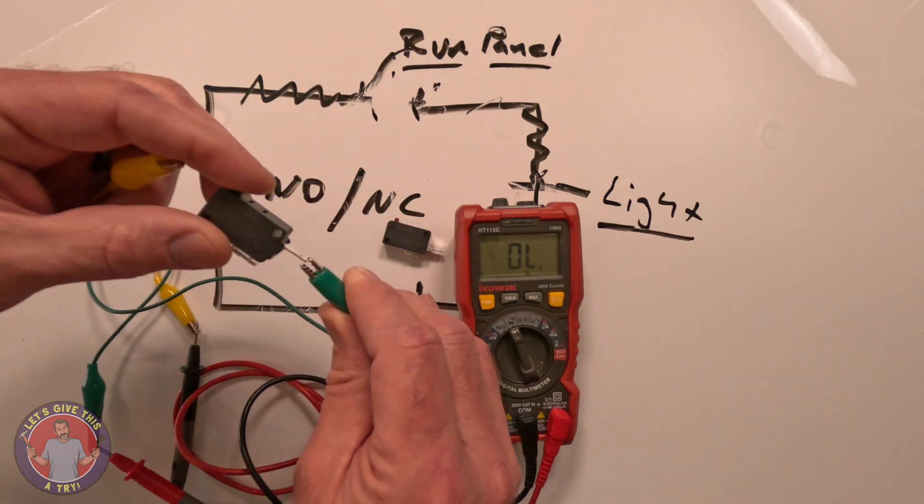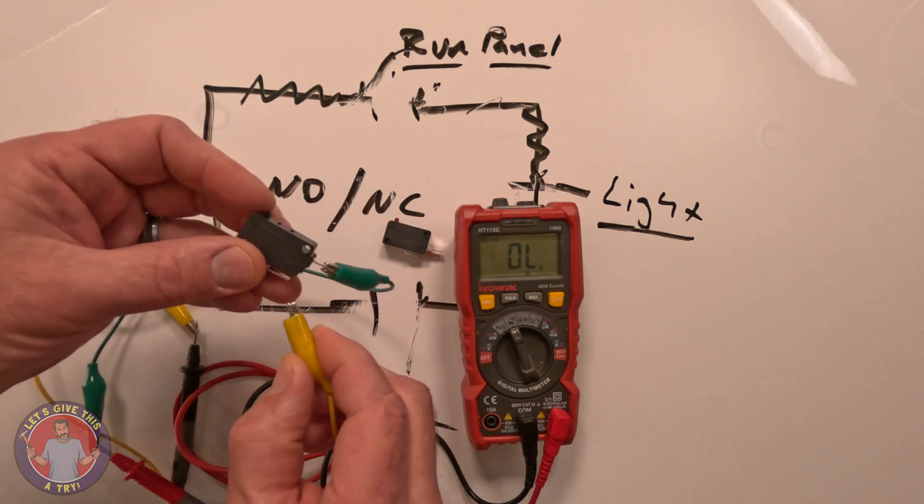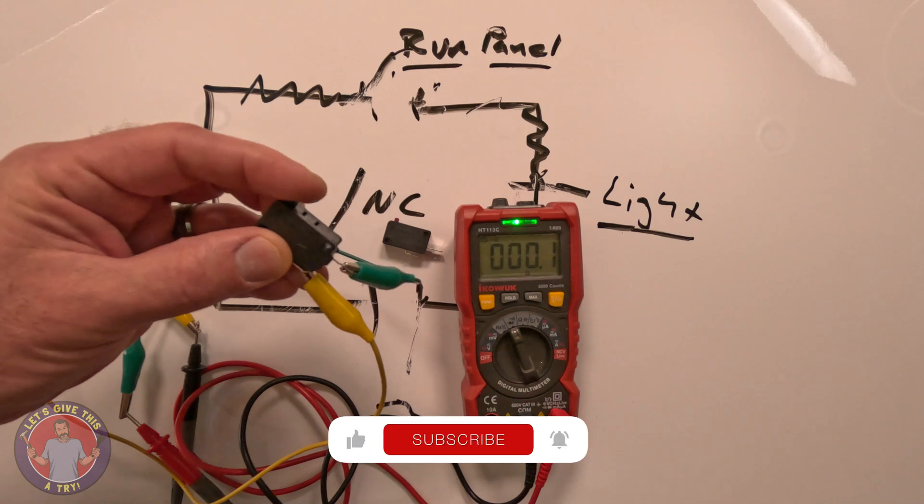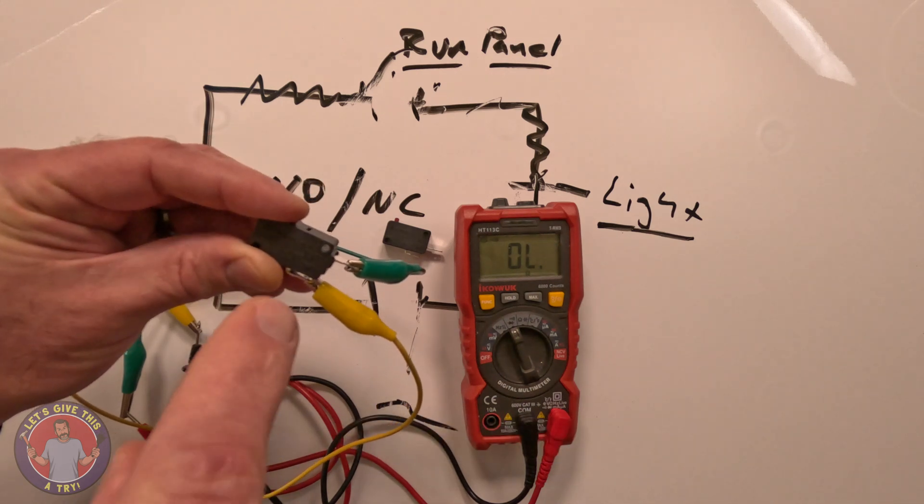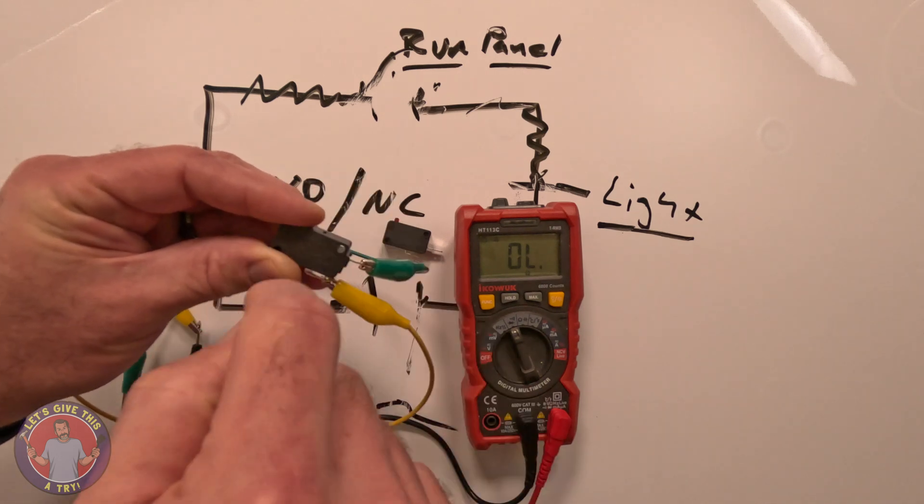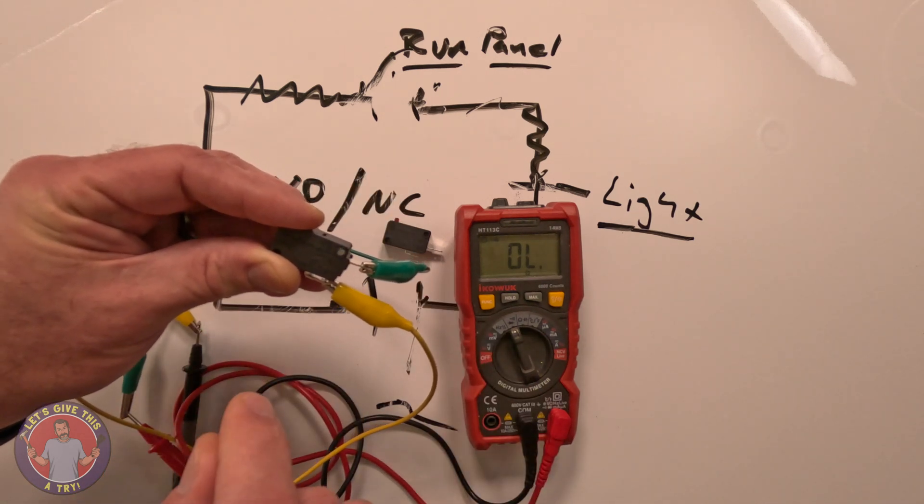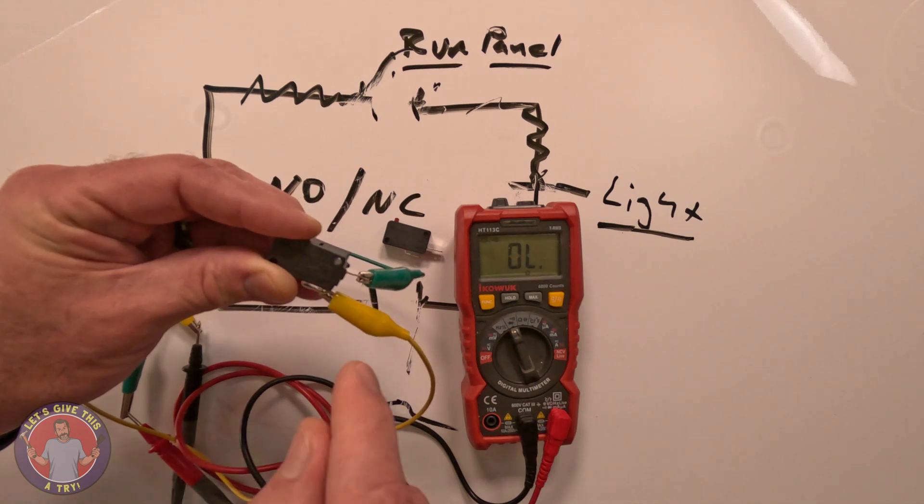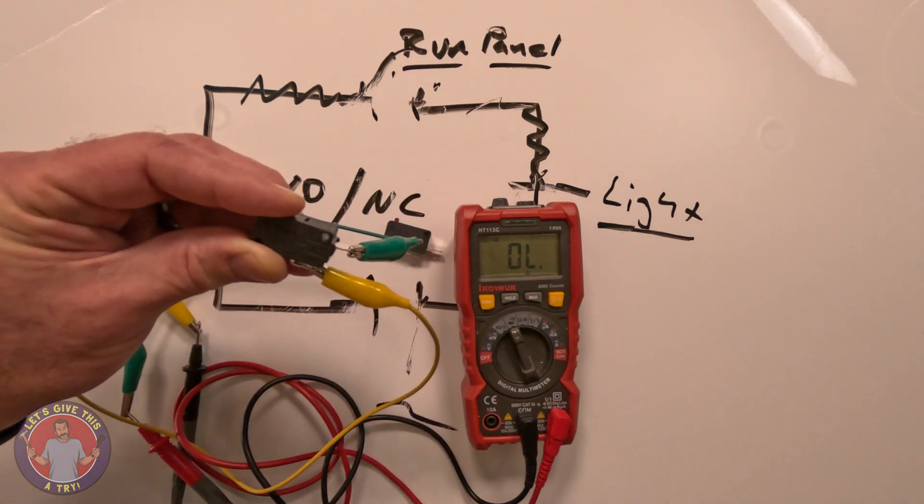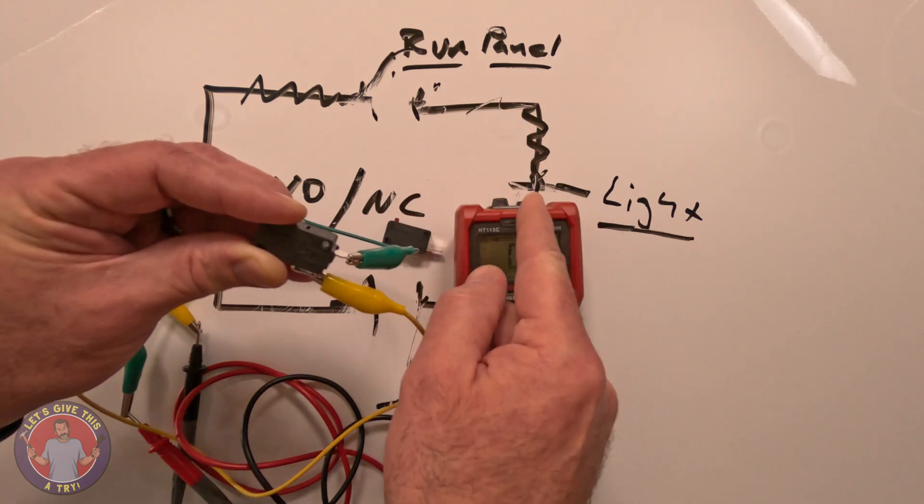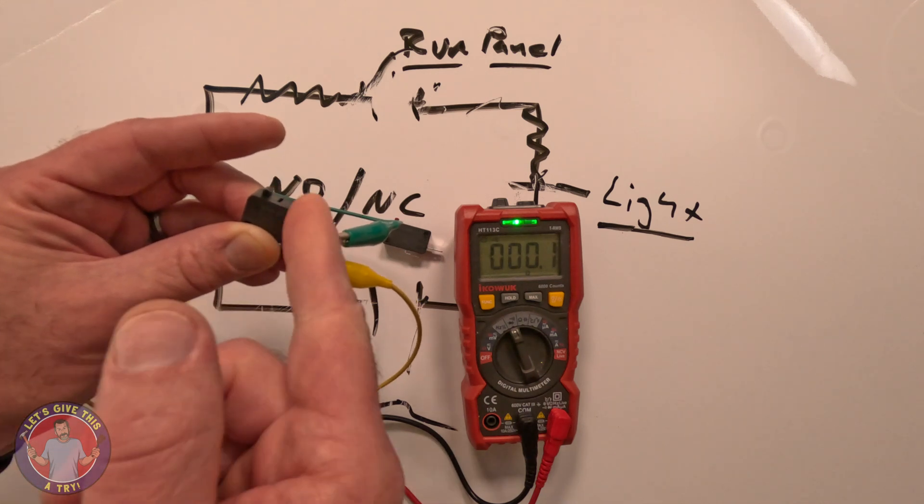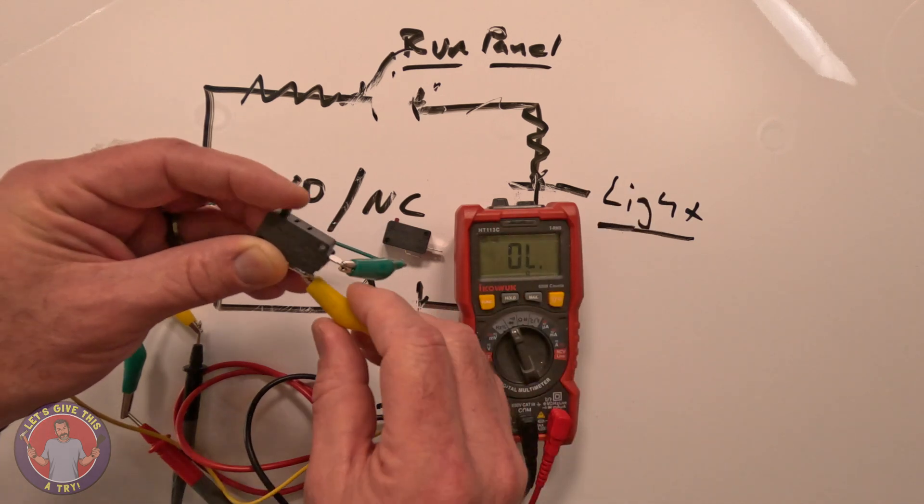We're going to take this first one. We're going to attach one clip here and one clip there, and right away we're showing that it has continuity. Now watch what happens when I press the button. It opens. So this particular switch, when the door is closed to the microwave, pushing that button down is a normally open switch. This would go for the light, because with the door closed, which pushes the button down on the switch, it turns the light off. When you open the door, it takes off from the button, which closes the circuit, allowing the light to go on.